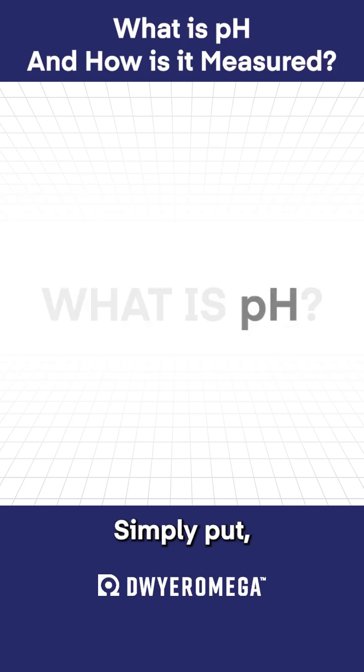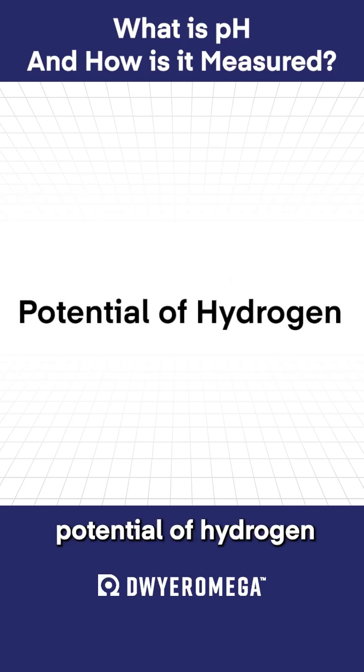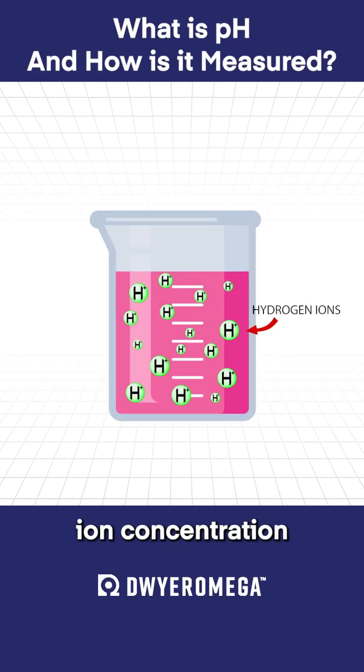What is pH? Simply put, pH stands for potential of hydrogen, or the measurement of hydrogen ion concentration in a liquid solution.